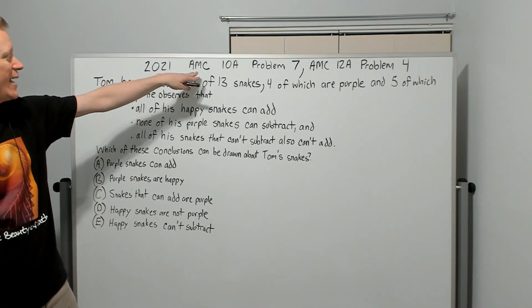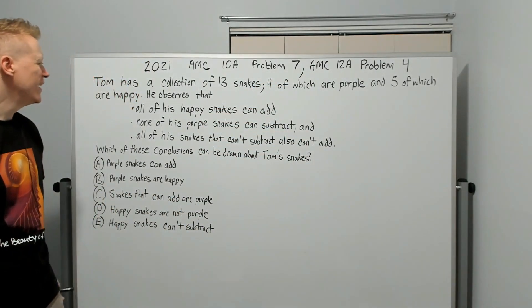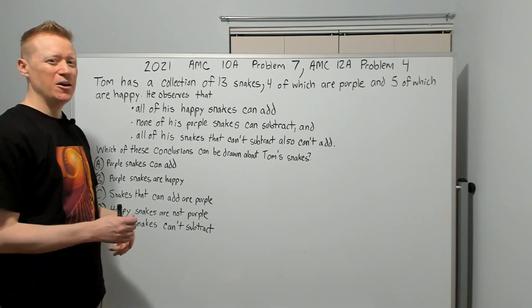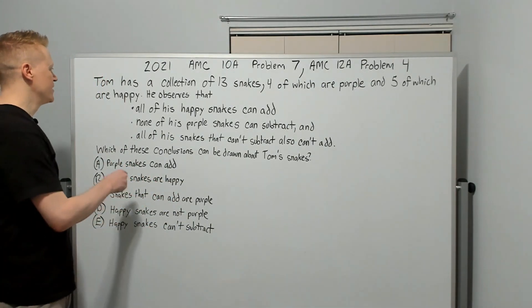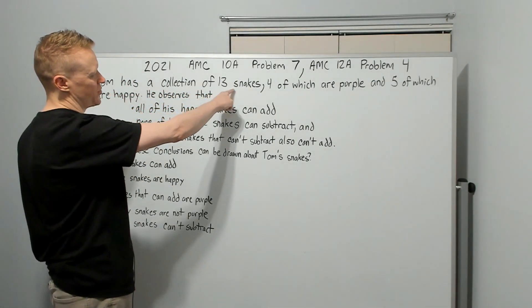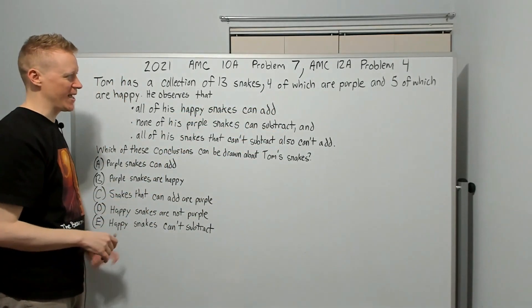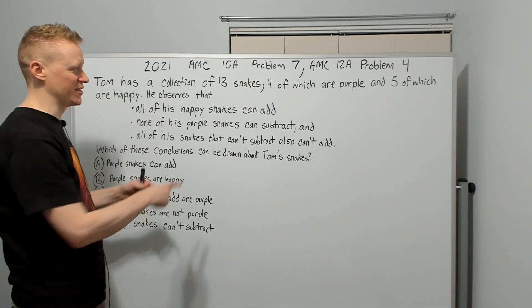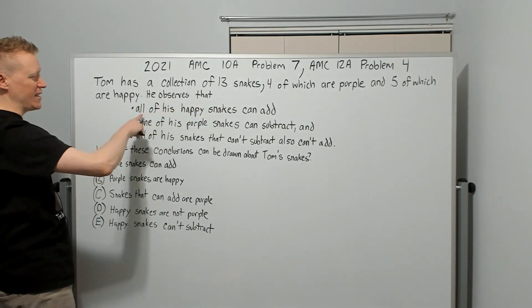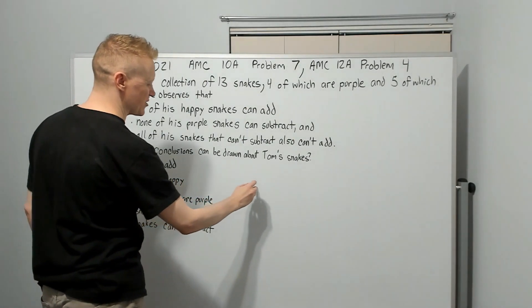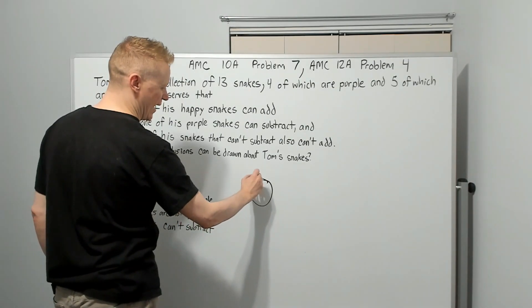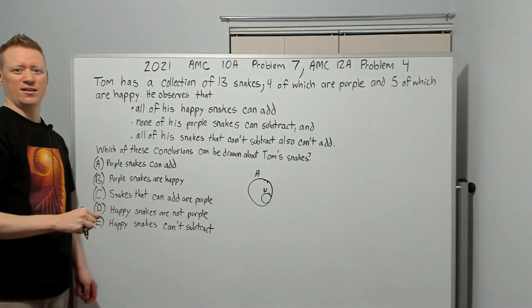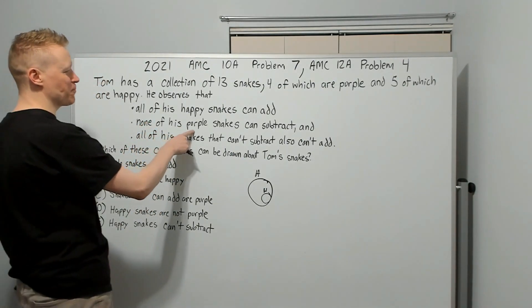Continuing on with the 2021 AMC 10A Problem 7, also the 12A Problem 4. They haven't had this type of question in quite some time, which is why I really liked it. It's basically pure logic. Tom has a collection of 13 snakes, four of which are purple and five of which are happy. He observes that all of his happy snakes can add. So I'm going to immediately go to that Venn diagram idea. So add would be here and the happy would be here. They're obviously adders.